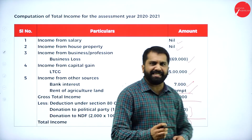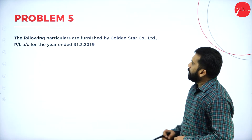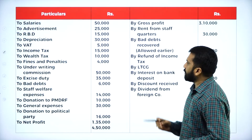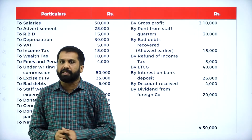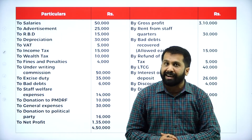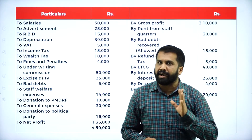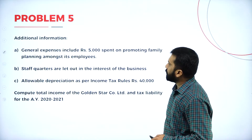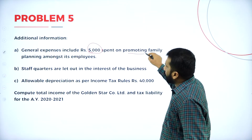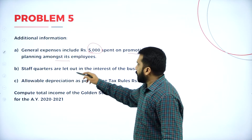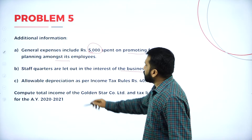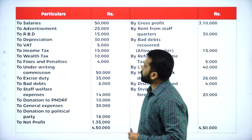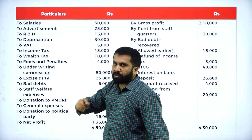Now we will go for the next problem - the easiest one; you can also solve this yourself. Following particulars are furnished by Golden Star Company Limited - Profit and Loss account for the year ended 31st March 2019. We are only supposed to identify the disallowed items. Going to adjustments first: general expenses include 5,000 spent on promoting family planning, which is part of the business. Stock quarters are let out for the interest of business - business purpose. Allowable depreciation is given as an adjustment, so we have to consider depreciation.